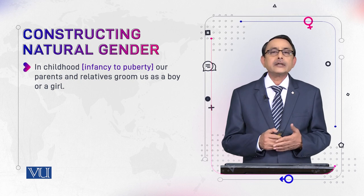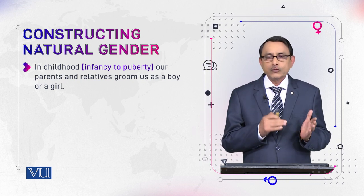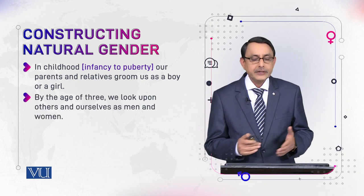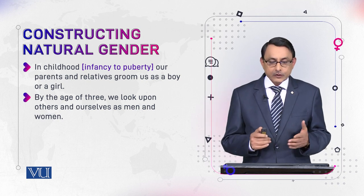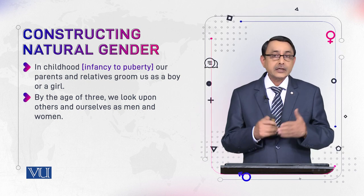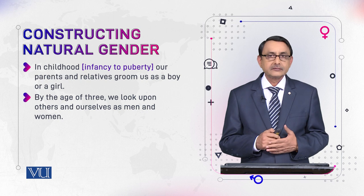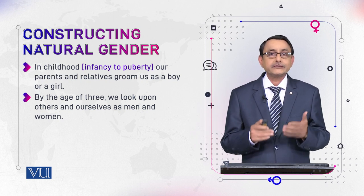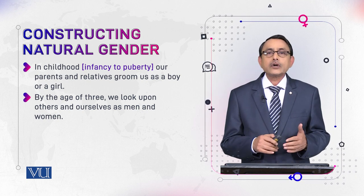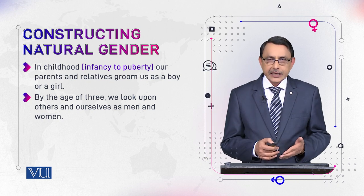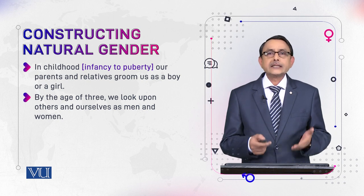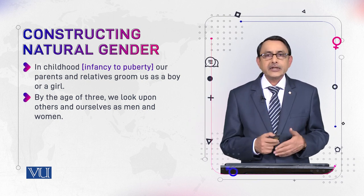We are groomed as boy and as girl. By the age of three, we look upon others and ourselves as men and women — we are conscious of our gender. We are conscious of our own gender and also of the gender of others around us, and we treat them the same way our elders treated us as boy and girl.